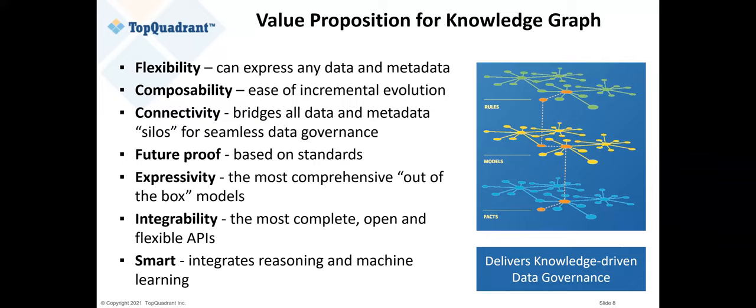Knowledge graphs align with Gartner's view that metadata management requires continuous innovation — what they also call a connected enterprise. Knowledge graphs are a flexible, standards-based, non-black-box, highly integratable metadata solution. Adaptable is another software virtue that could be added to this list. The next leap in the journey from metadata to a metadata catalog or data catalog brings us to knowledge graphs, and then really adapting to the future.